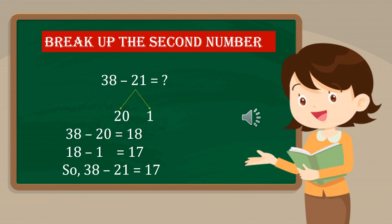Strategy 1: breaking up the second number. For example, we are going to subtract 38 and 21. Here we are going to break up the second number 21 into 20 and 1. By grouping, 38 minus 20 gives you 18, and 18 minus 1 gives you 17. So 38 minus 21 gives you 17.